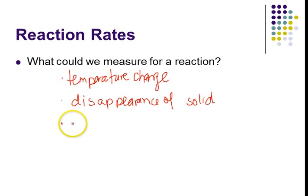You could also do things like the volume of a gas. If the gas is a reactant, it would go away and you can measure the decrease in the volume. If the gas is a product, you can measure the volume of the gas — say if you collected it in a eudiometer.